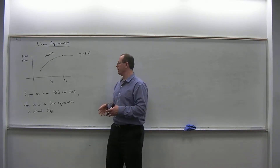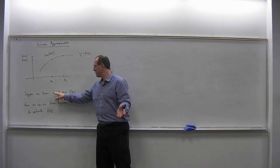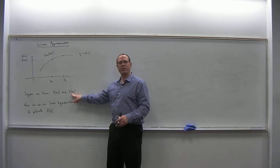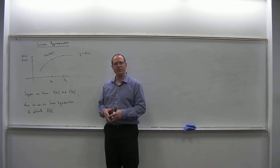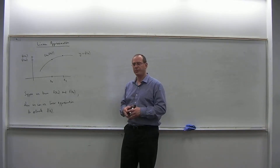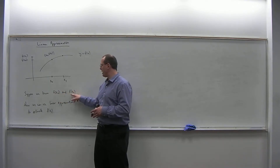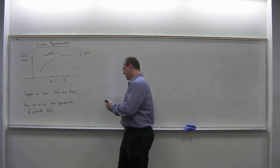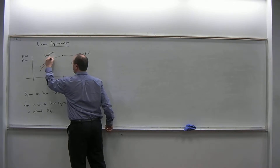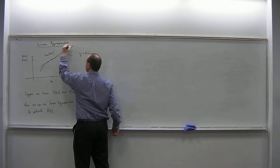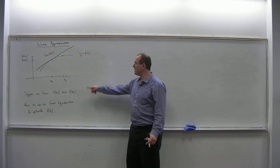Frequently, if x0 is a number we can plug into f without a calculating device, then chances are good we can also plug x0 into f prime, so we will also know f prime of x0 without using a calculator. And if we know f of x0 and f prime of x0, then we can make the equation of the tangent line to the curve without even using a calculator.